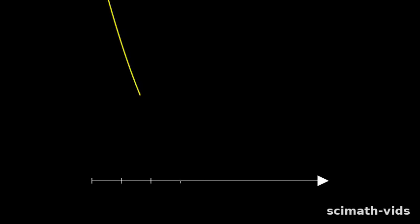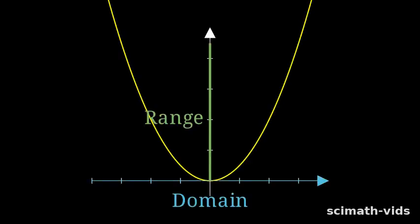On a graph, the domain stretches along the x-axis. The range covers the y-axis.